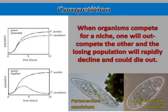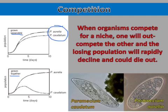These two species of Paramecium are commonly used in experiments to demonstrate competition. You can see that when they are grown separately, both species are very successful. However, when they are grown together, Paramecium aurelia is very successful, but Paramecium caudatum almost dies out completely in just 10 days.